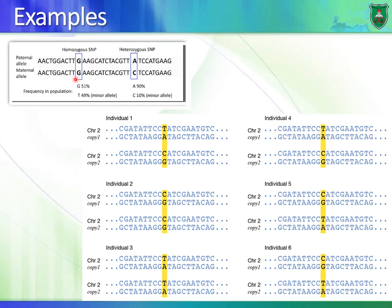Here are examples of SNPs. One individual has G and G on both paternal and maternal alleles at a certain known variable location — we say this person is homozygous for this particular SNP. Looking at another location, the paternal allele contains an A and the maternal contains a C — we say this person is heterozygous for this particular SNP.